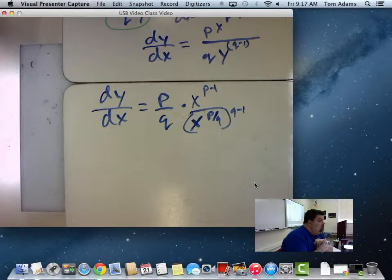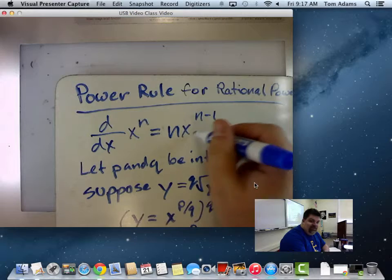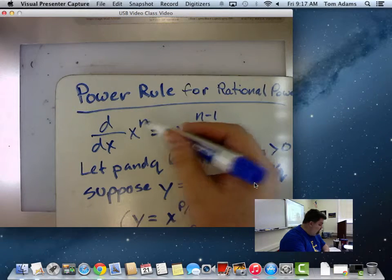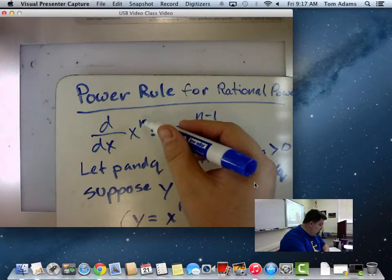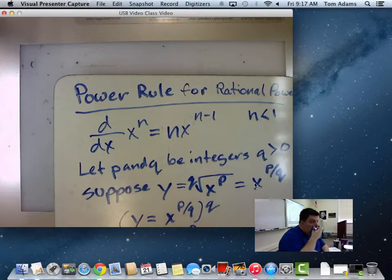So will the power rule work if I say X raised to the 2 thirds? Well, we're trying to prove that. And one way that we prove that is symbolically. We use a bunch of variables to represent numbers. And if I can make it look a certain way, in other words, what I want to do is I want to kind of prove this. I want to prove that this will work if N is less than 1, if it's a fraction. Okay?